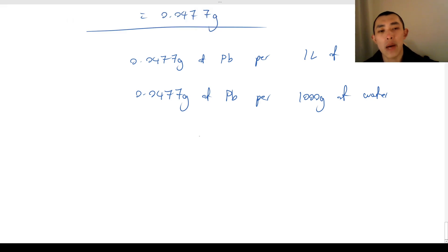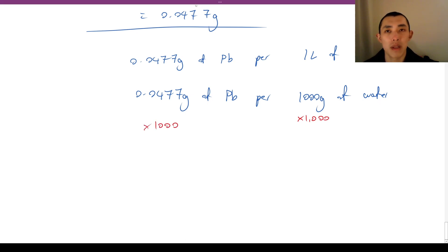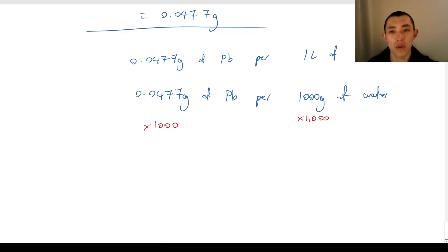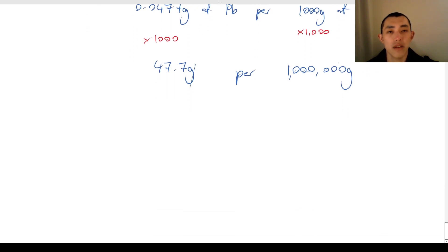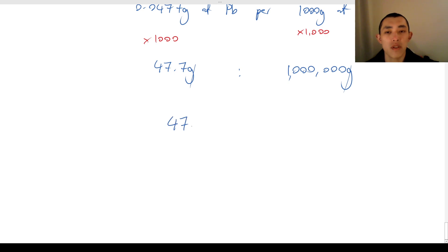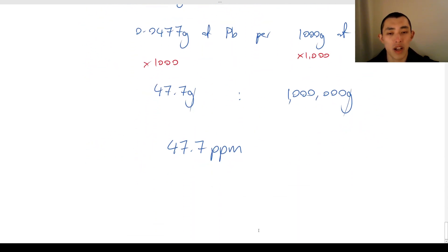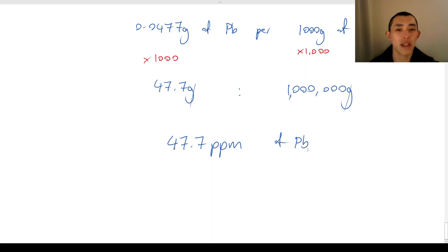Just like before, it's a little annoying to deal with something that isn't a million. So let's multiply both sides by 1,000 to get into the millions. That gives us 47.7 grams per 1,000,000 grams. The grams cancel out because this is just a ratio, so this must be 47.7 parts per million. Therefore, we have 47.7 parts per million of lead. And you can always apply this method — it's always going to work.